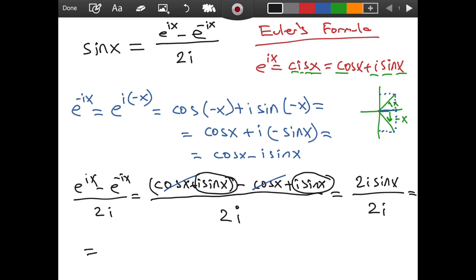If we simplify by 2i, we will of course get sine of x. So we have actually proven that sine of x is equal to this expression, this quotient involving the imaginary unit i and Euler's number, the exponential e.